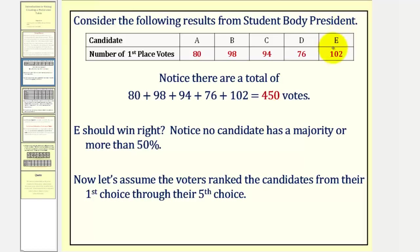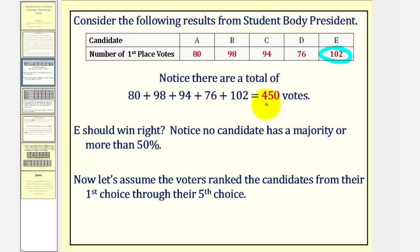Since candidate E has the most votes at 102, E should win, right? Well, notice that in order to have a majority of more than 50 percent, somebody would have to have more than 225 votes. No candidate here even comes close to having a majority of the votes.